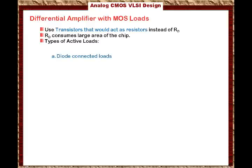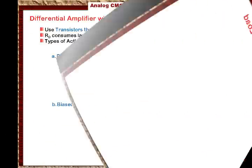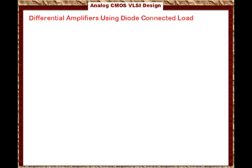If you have a PMOS transistor, as shown here, we connect the gate to the drain, and this transistor behaves as a diode — we discussed this connection in previous lectures. The second type of load is what we call a biased load, where the PMOS transistor is biased at a particular voltage, causing it to behave as a load resistance across the drain-source. We will show examples of implementing differential amplifiers using both loads.